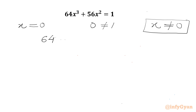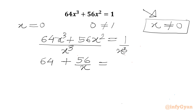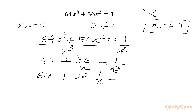Our equation is 64x³ + 56x² = 1. Now I will divide both sides by x³, since x is non-zero. So we get 64 + 56/x = 1/x³.